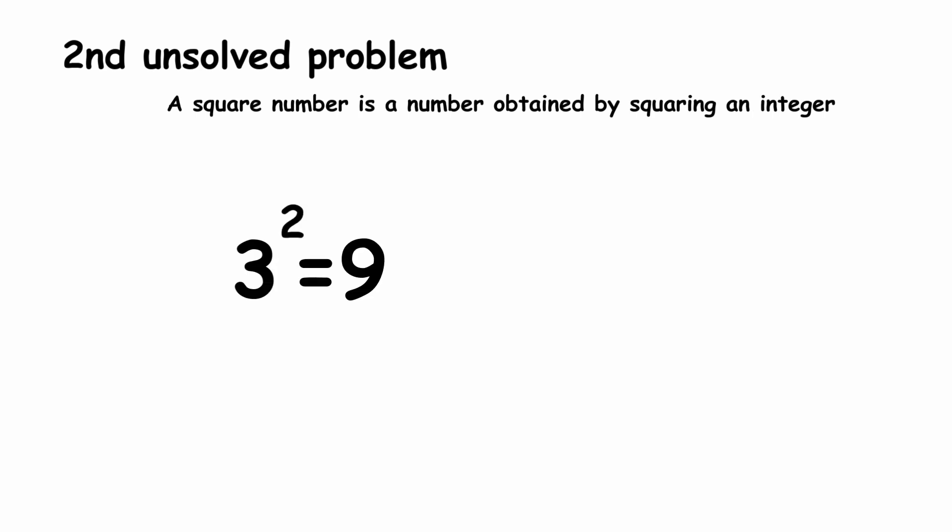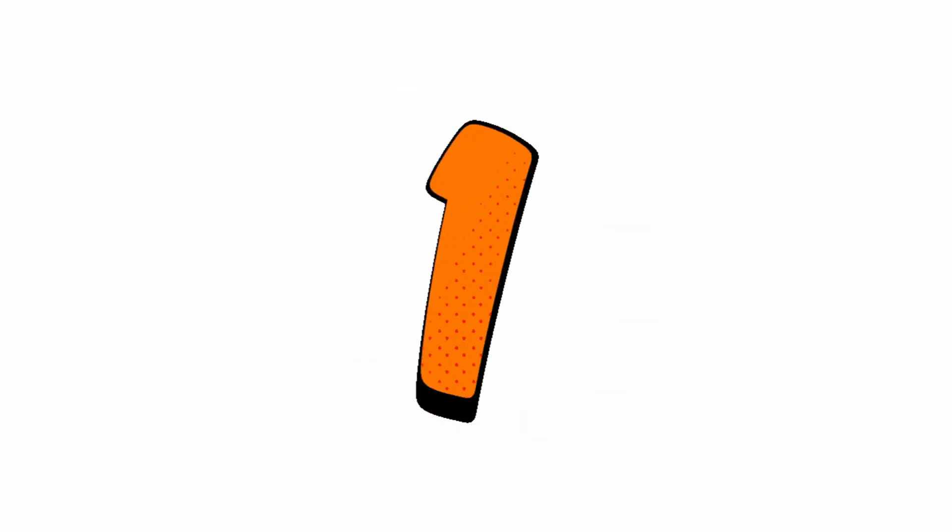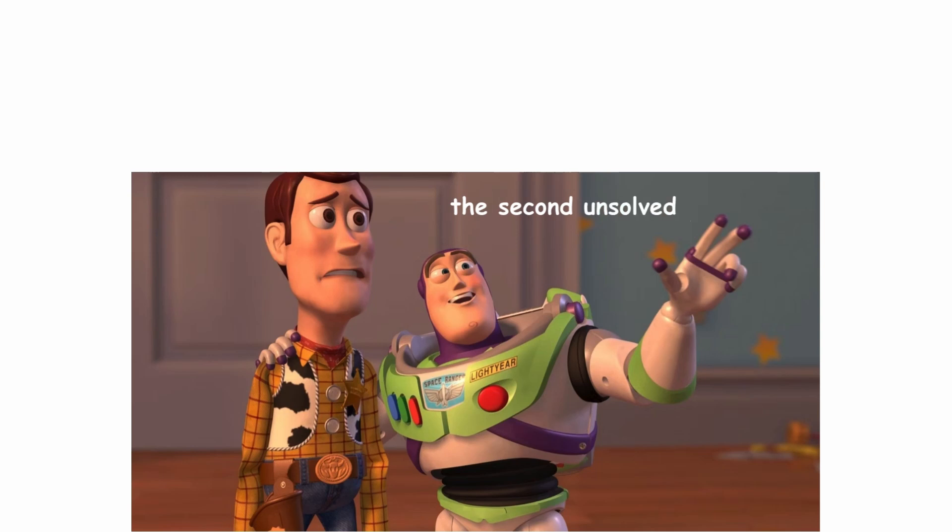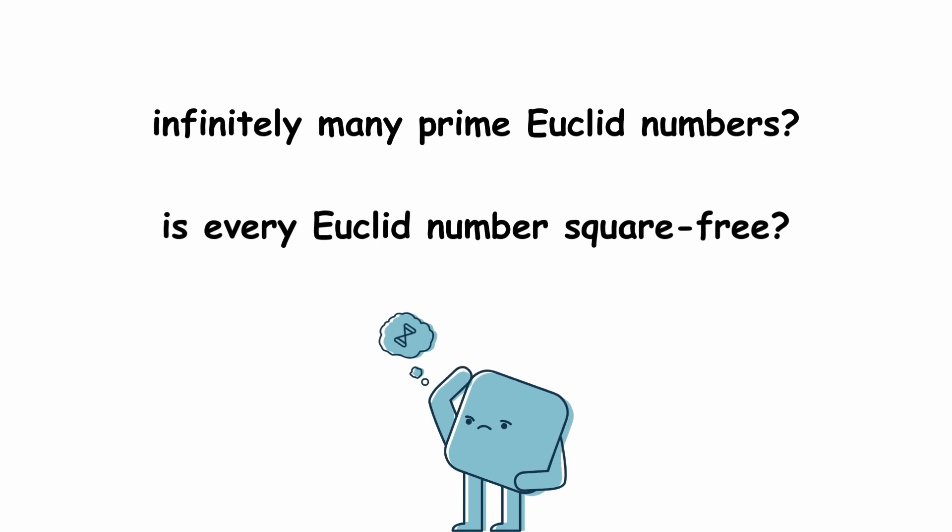The second unsolved problem involves a concept known as a square-free integer. A square number is a number obtained by squaring an integer. For instance, 3 squared equals 9 is a square number. An integer is called square-free if it is not divisible by any square number except 1. So the second unsolved problem is, is every Euclid number square-free? Unfortunately, these are two problems that we seem a long way from solving.